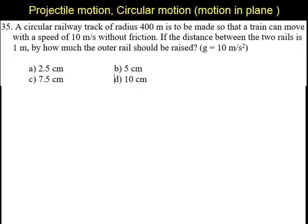We should know what is the relation between the banking angle and velocity. The relation between banking angle and velocity is tan θ equals v squared by rg. This is the relation for tan θ equals v squared by rg.